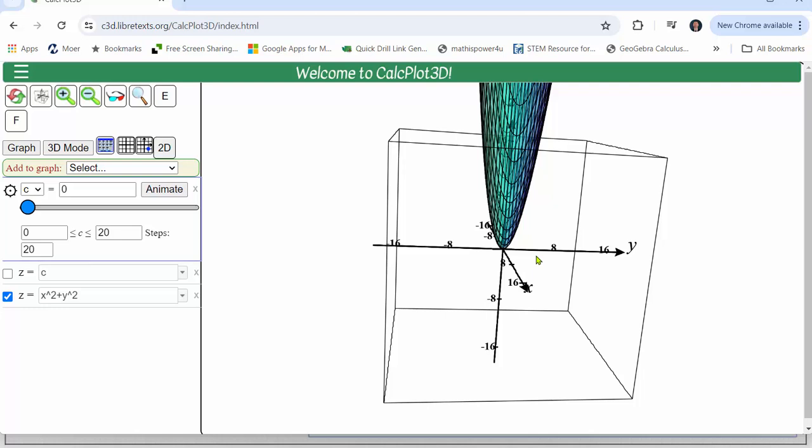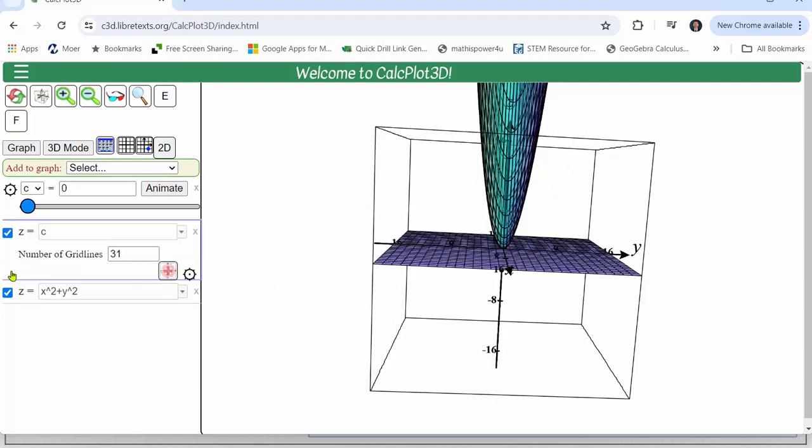And now let's graph the plane z equals zero. And now we'll animate the plane and each time the plane intersects the surface the intersection represents a level curve for the function.